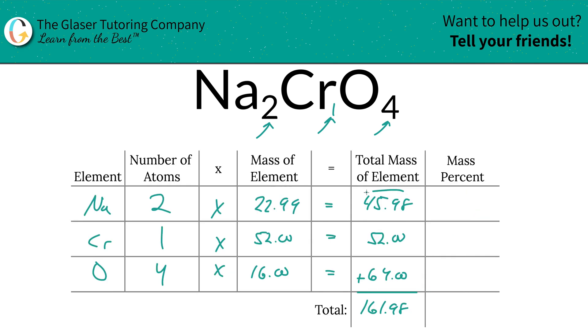So to find the mass percent of sodium, we're simply going to take the total mass of the sodium divided by the total mass of the entire compound. So we have 45.98 divided by the total compound, 161.98. Then multiply that by 100 to get it into percentage terms. It's a simple percent, part over whole times 100. And the percentage here will roughly work out to be 28.39%.